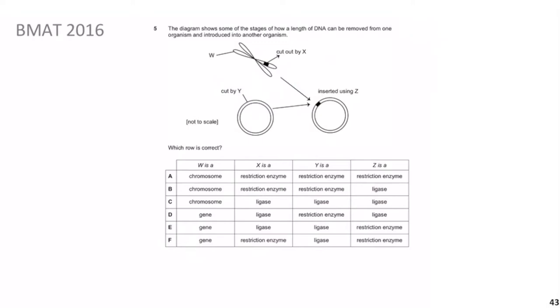In this diagram, the blob has two parts joined at a center — those are sister chromatids joined by a centromere, making it a chromosome. A part of a chromosome is a gene, so the black blob is a gene, and W must be the whole chromosome. X is used to cut out that gene, so X is a restriction enzyme — specific in what sequences it cuts.